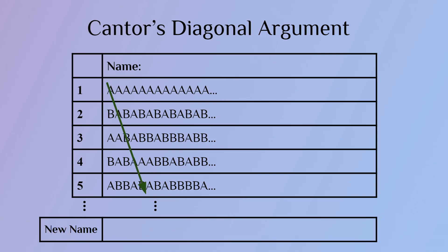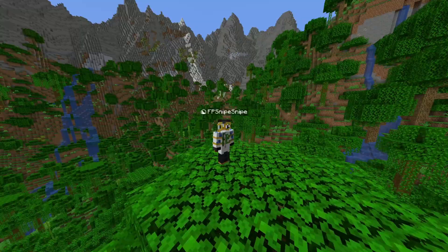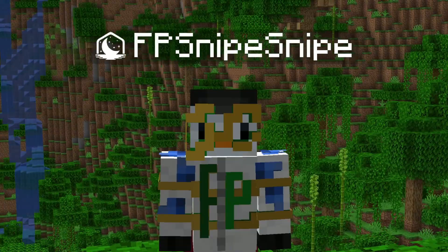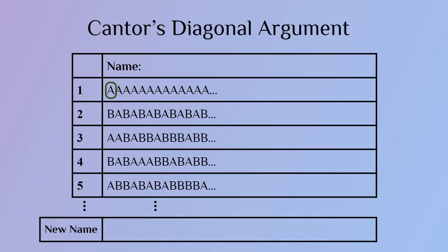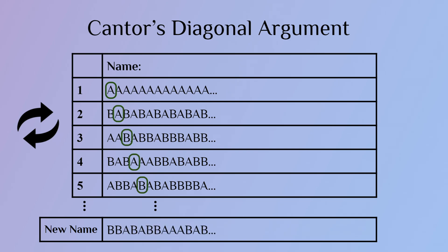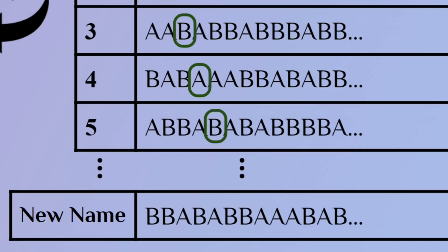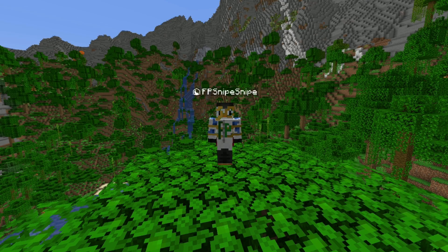Now we need to make a new name by going diagonally down. What I mean is: go to the first letter of the first name and swap it — if it is an A, make a B, and vice versa. Because the first letter of the first name is an A, the first letter of our new name is B. Now go to the second letter of the second name, swap it again to get B again, and repeat this all the way to infinity. We now made a new name from a supposed list of infinite names. More importantly, this name is unique from all of the names already on the list. We made an infinite list, but we just created a name that was not on the list. What we conclude from this is that there are multiple different-size infinities.